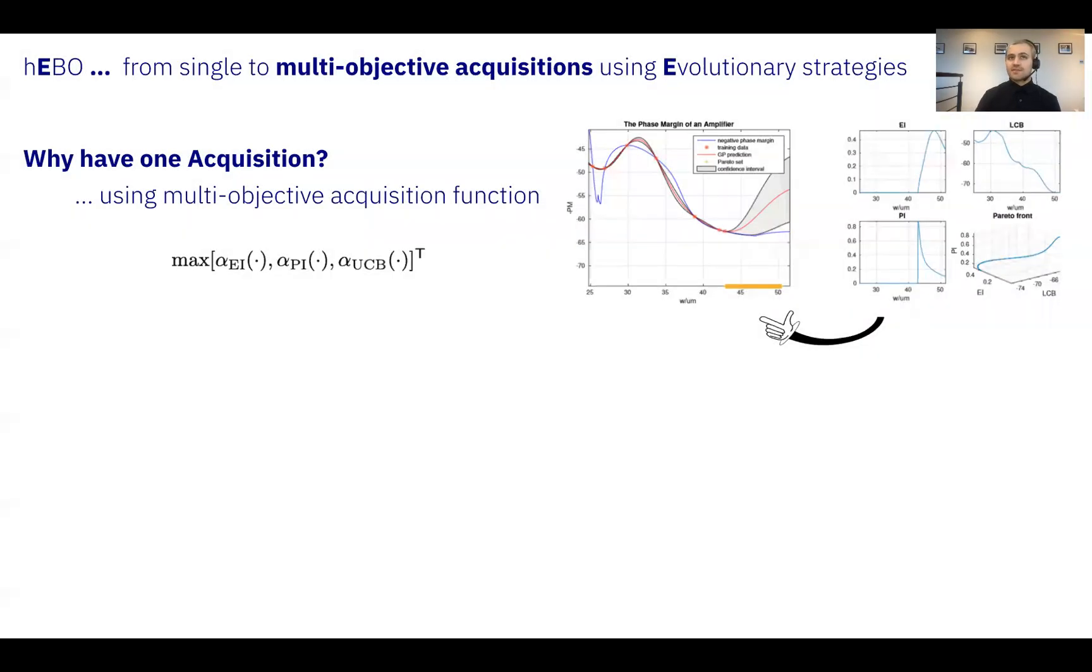Why pick one acquisition when you can hedge your bets and pick multiple? We use a multi-objective acquisition function instead. As shown in the plots at the top right, each individual acquisition has a differing maxima point. But finding a Pareto set between these acquisitions produces a diverse and informative set of points to be evaluated next in our black box function.